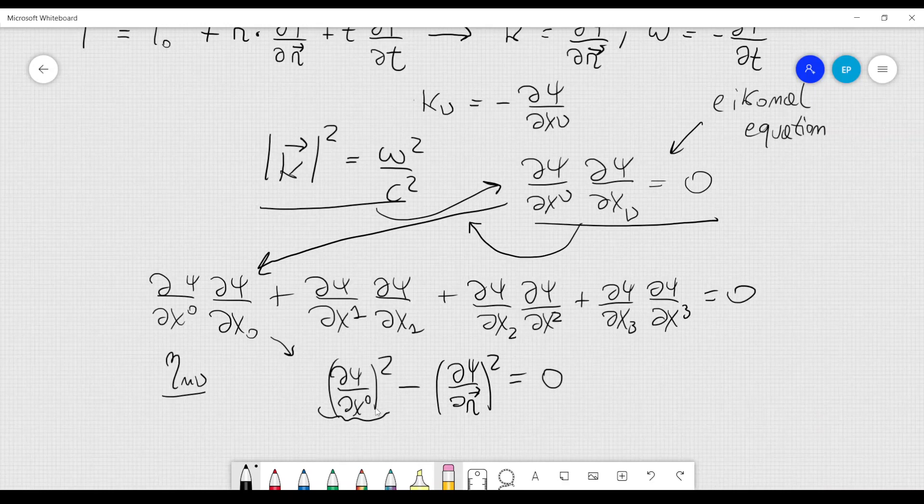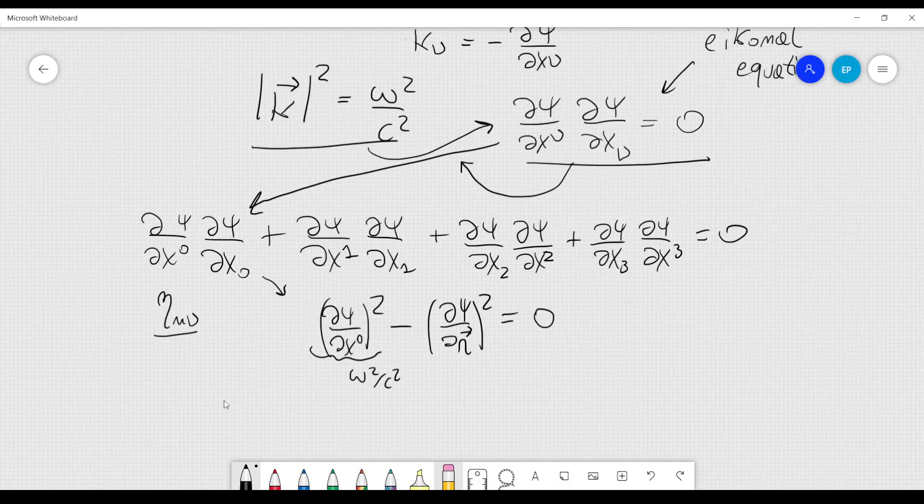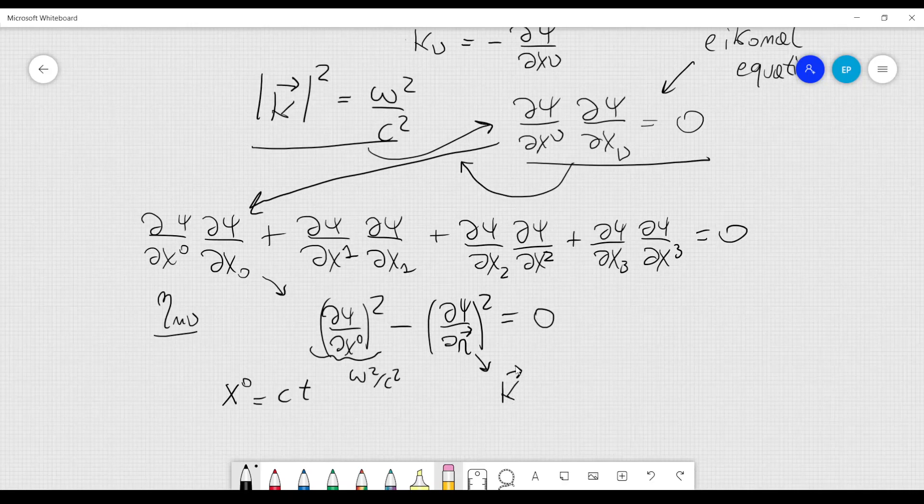But this is just omega squared over c squared, because remember that x0 is equal to c times t, whereas this one here is just the vector k. So you get exactly that equation.